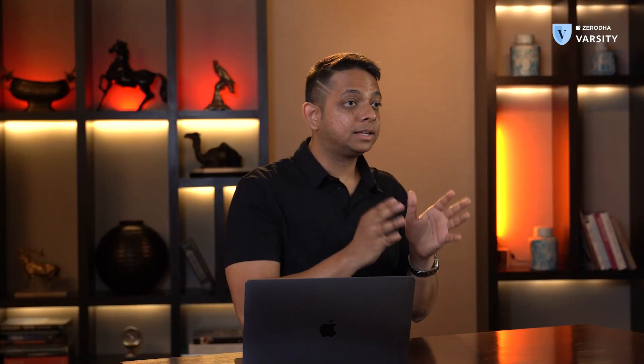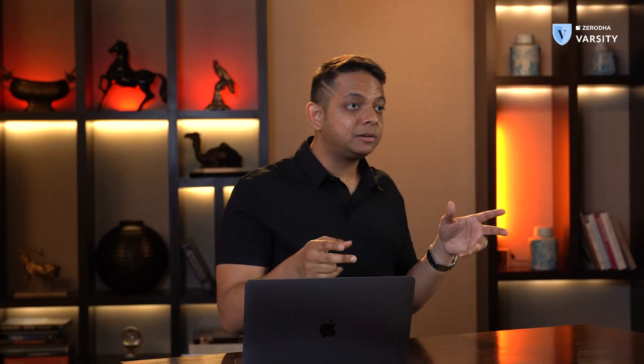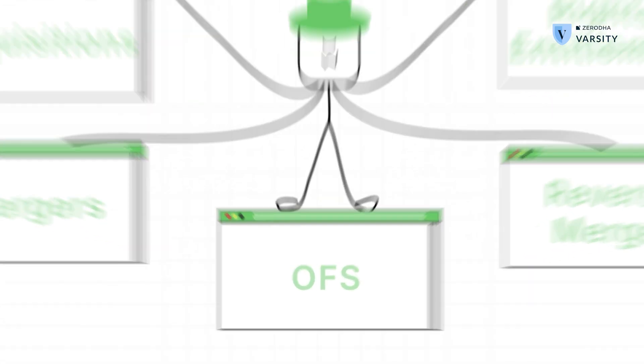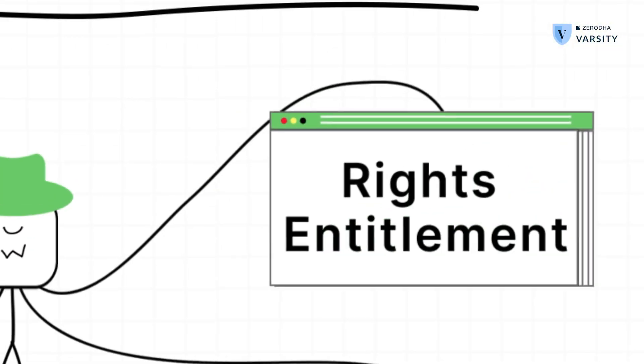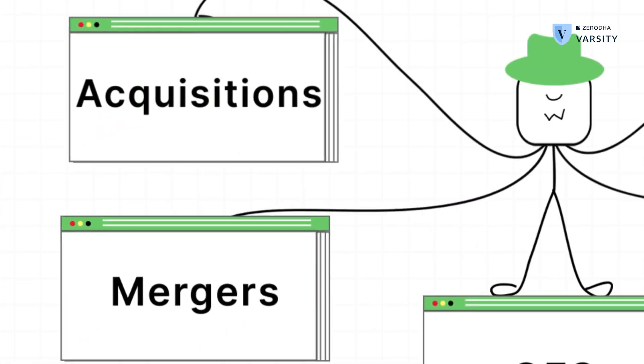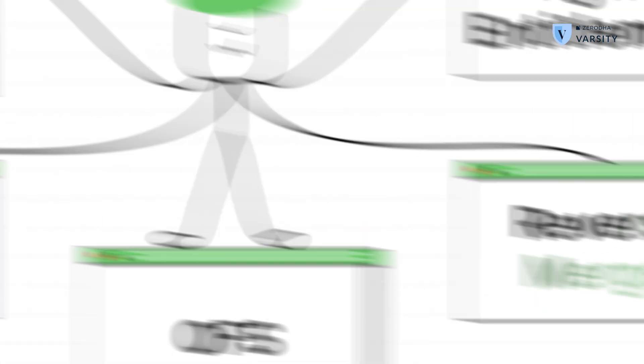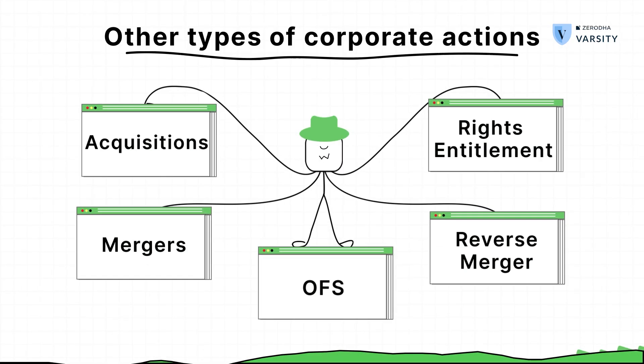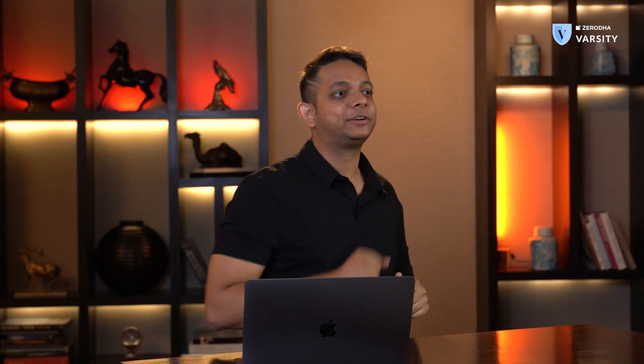There are a few other corporate actions which we've not covered here, but you can learn about them on the Varsity chapter. These include things like the OFS, rights entitlement, mergers and acquisitions, and the reverse merger. I hope you found this video useful — we covered all the main corporate actions. In the next video, we'll talk about transaction types. You already know how to buy and sell stocks, but there are different order types that you might find really useful, so see you in the next video.